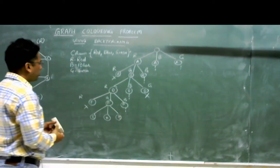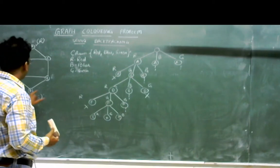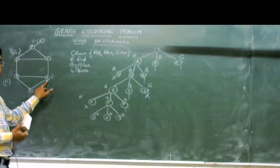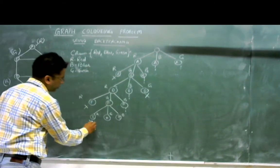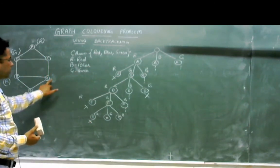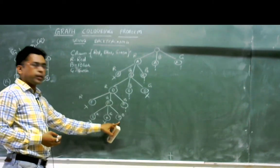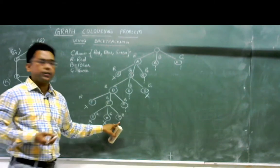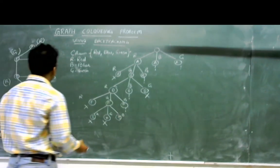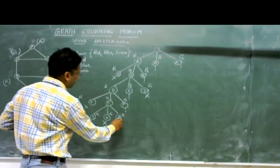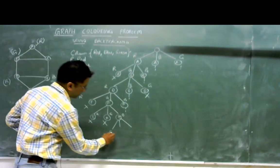For node E, the three options are red, green, and blue. Red is not allowed because an adjacent node is red, and green is not allowed because an adjacent node is green. The only option left is blue, so I must use blue for node E. After coloring E as blue, the last node is C.